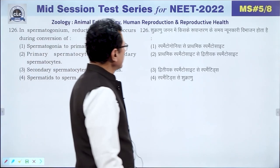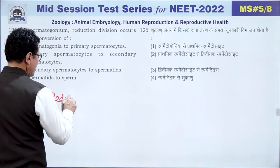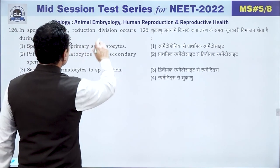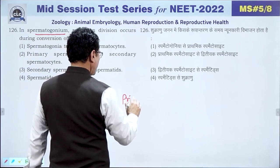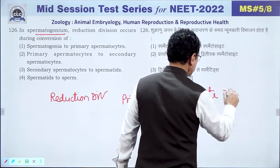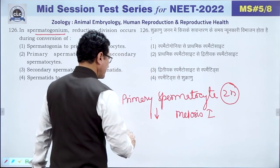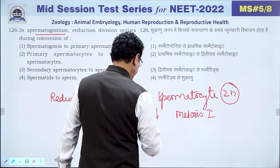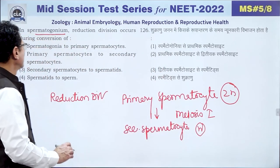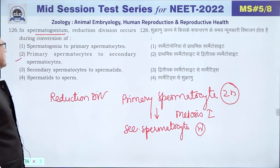Question 126: In spermatogenesis, reduction division (meiosis I) occurs during the conversion of primary spermatocyte (2N) to secondary spermatocyte (N). The answer is 2 — during the formation of secondary spermatocyte from primary spermatocyte.